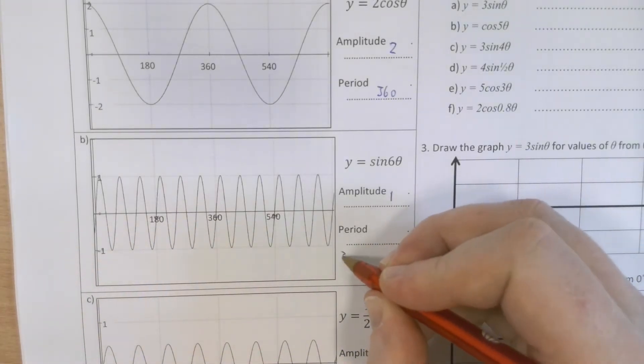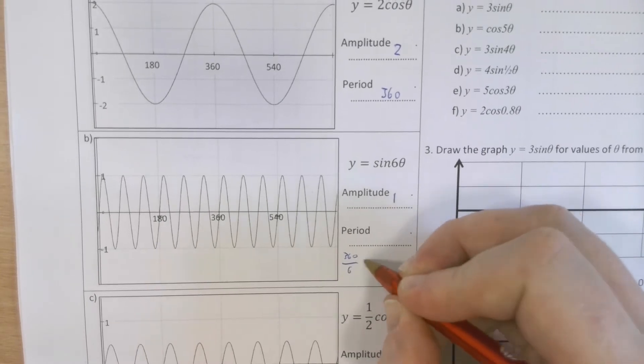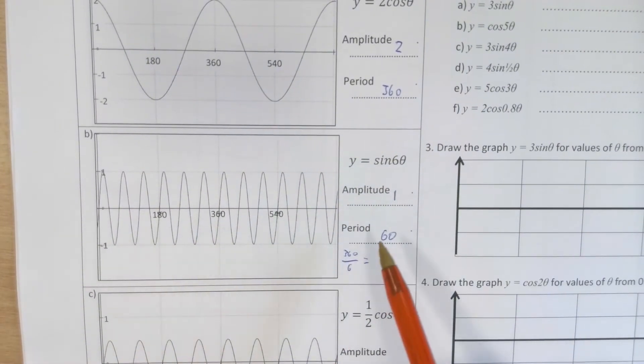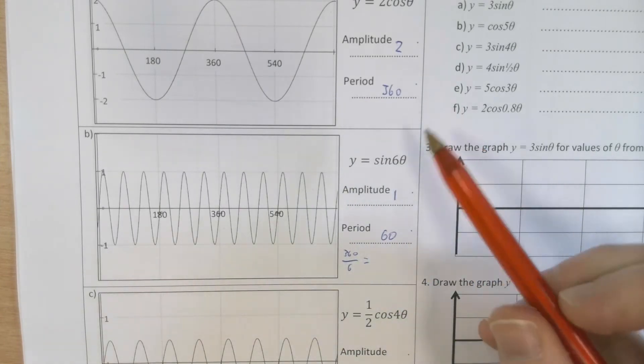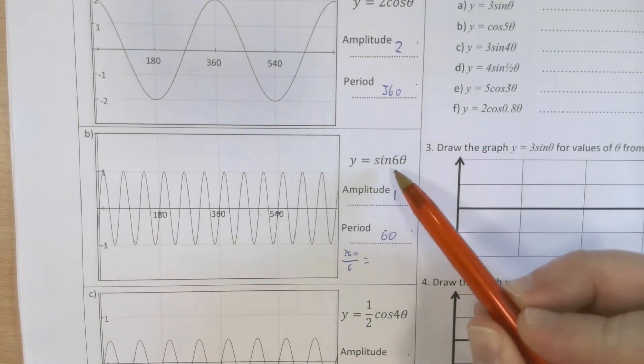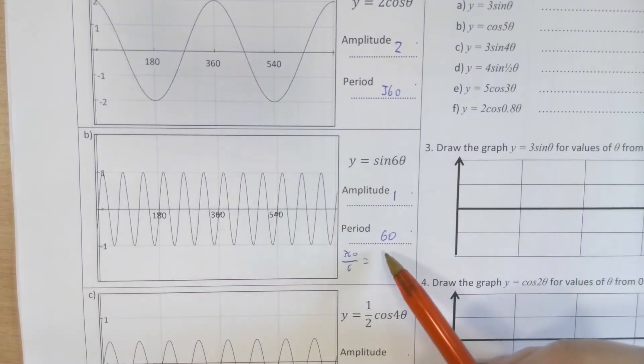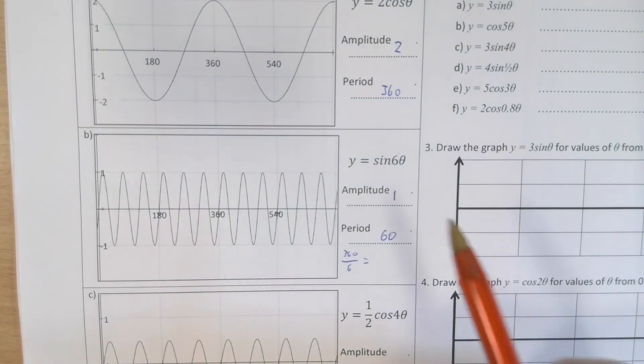So the period is 360 divided by 6, which is 60. Or alternatively, we can immediately just grab the number in front of that theta and divide 360 by that number to come up with that period. I hope that makes sense.